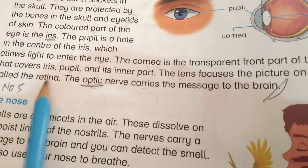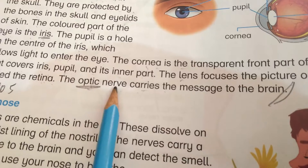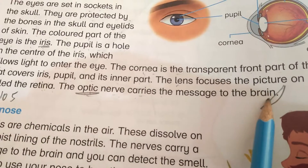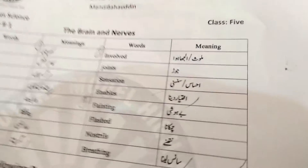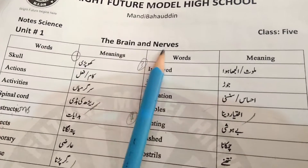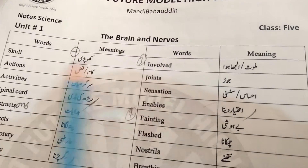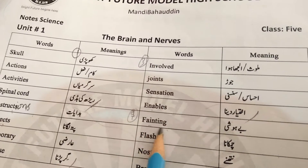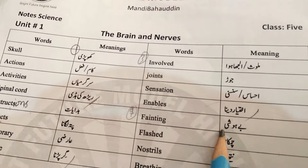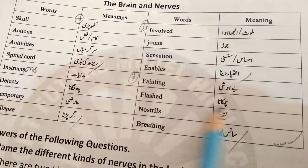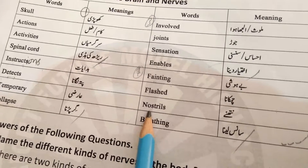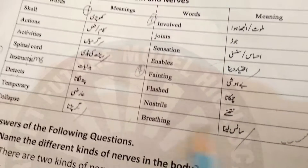The optic nerves carry the message to the brain. Work on notes. Vocabulary: brain and nerves — meanings include: cutting, behoshi (unconsciousness), chamakna (flash), nostril, breathing, sans lena.